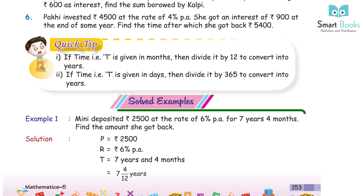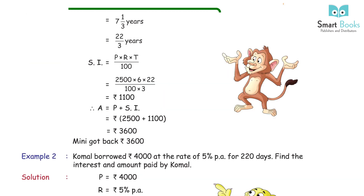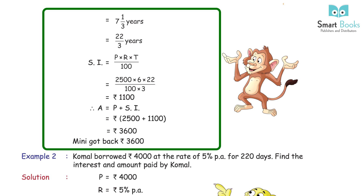Solved Example 1: Mini deposited Rs 2,500 at the rate of 6% per annum for 7 years and 4 months. Solution: P = Rs 2,500, R = 6% PA, T = 7 years 4 months = 7 + 4/12 = 7⅓ = 22/3 years. SI = 2,500 × 6 × 22 ÷ (100 × 3) = Rs 1,100. A = P + SI = 2,500 + 1,100 = Rs 3,600. Mini got back Rs 3,600.